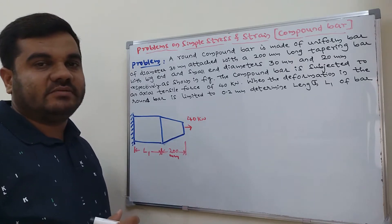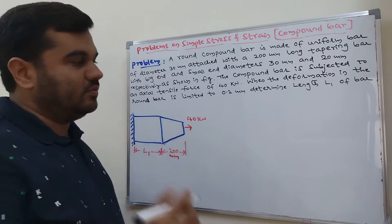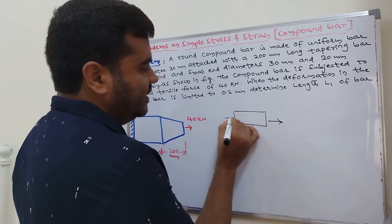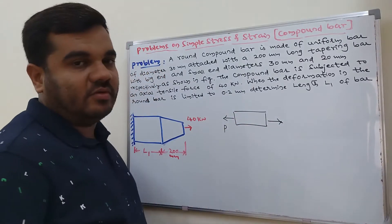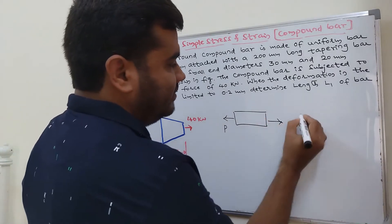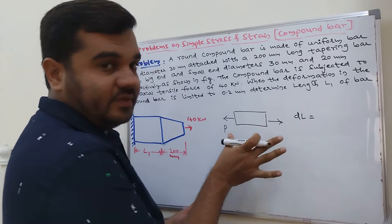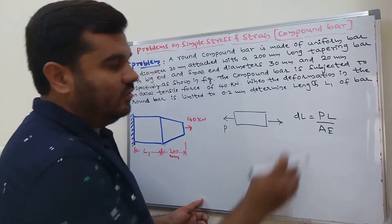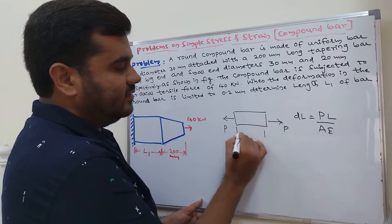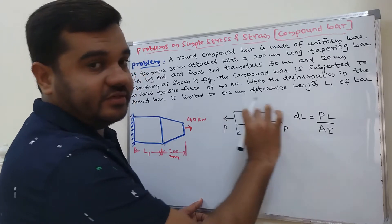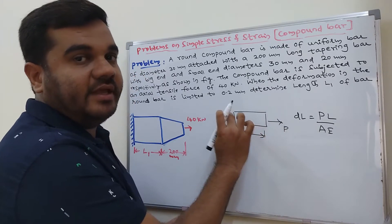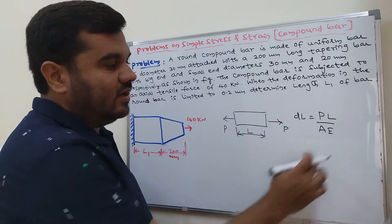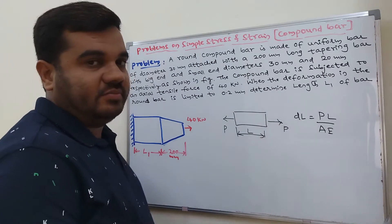In the previous video, we derived the formula for different cross sections. Suppose a uniform bar is there and it is subjected to tensile load P — the deformation formula we derived is PL by AE, where P is the applied load, L is the length of the bar, A is the cross-sectional area, and E is Young's modulus.